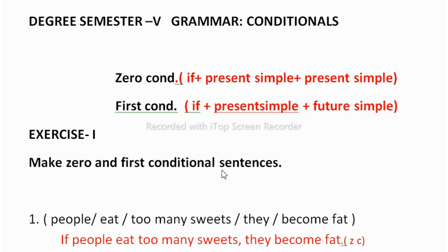In the first exercise you have to make zero and first conditional sentences. Zero conditional refers to situations that are always true or possible — we talk about general situations which are always true, like if we switch on the fan the fan will rotate, or if it rains the ground gets wet. The structure of zero conditional is: if + present simple + present simple. And first conditional is used for real or possible future situations.